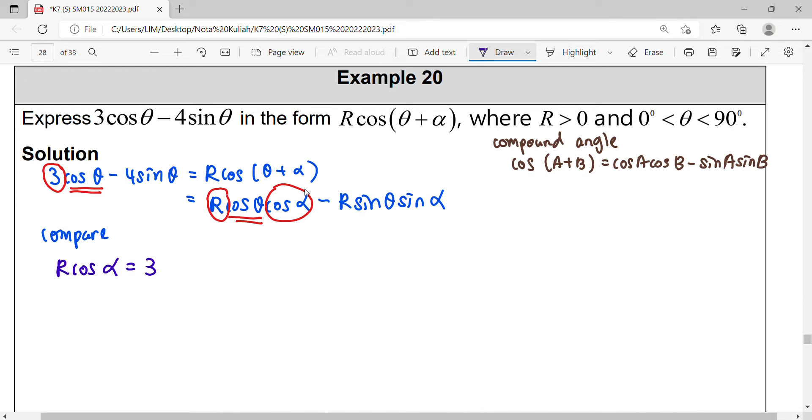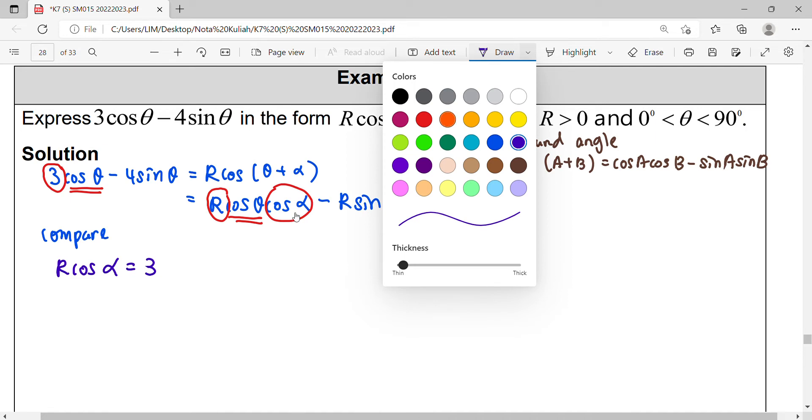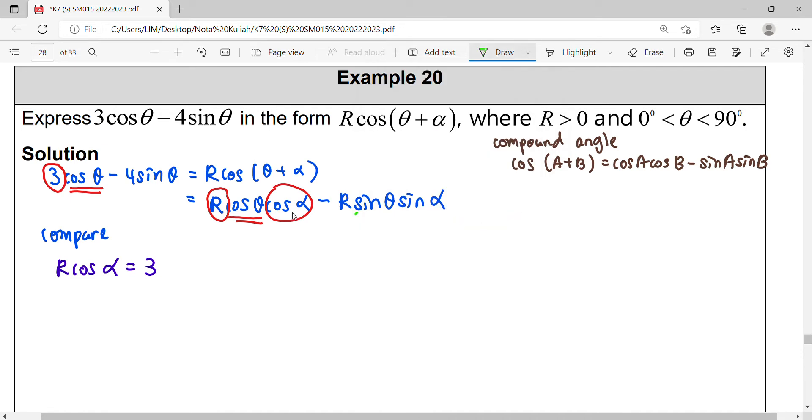When we compare to the sinθ term, you can notice that the coefficient for sinθ is 4, so R sinα equals 4.